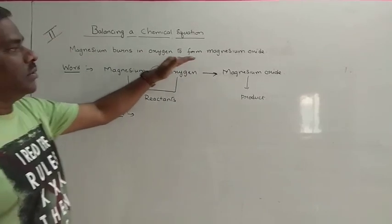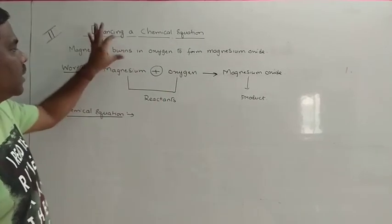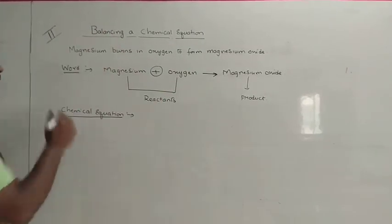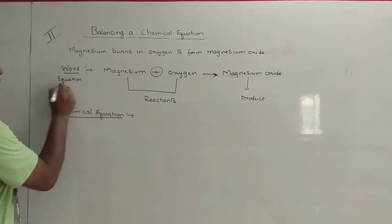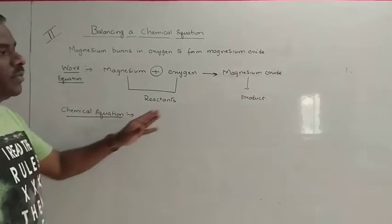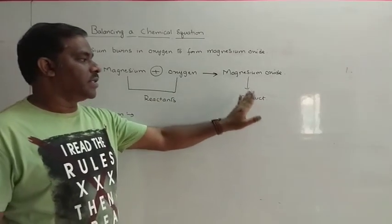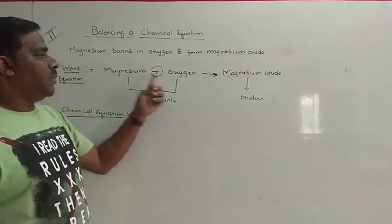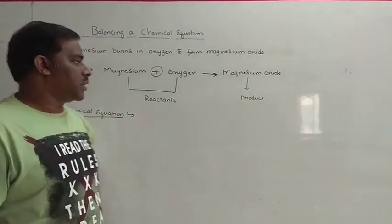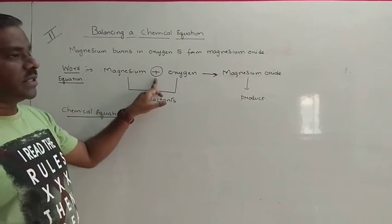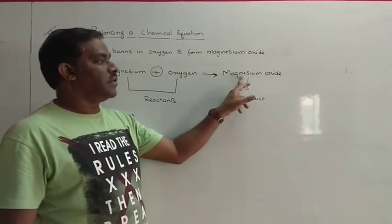Here magnesium burns in oxygen to form magnesium oxide. Now this is a statement. We can reduce the burden by writing a word equation. In a word equation we just represent the words of the reactants and the products. Here magnesium is combining with oxygen to form magnesium oxide. Magnesium and oxygen are called the reactants and magnesium oxide is called the product.